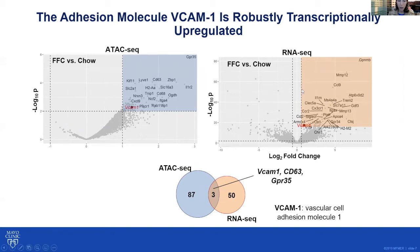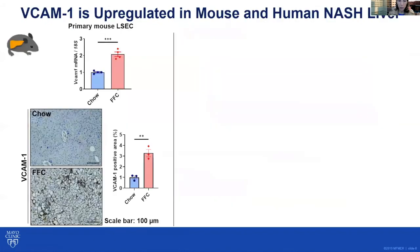Likewise, as shown in the RNA-seq on the right, we identified 50 genes that were differentially expressed in FFC-fed mice. And as shown in the Venn diagram on the bottom, the adhesion molecule VCAM1 was one of three overlapping genes identified using both ATAC-seq and RNA-seq. These findings indicate that in NASH liver, the adhesion molecule VCAM1 is robustly transcriptionally upregulated.